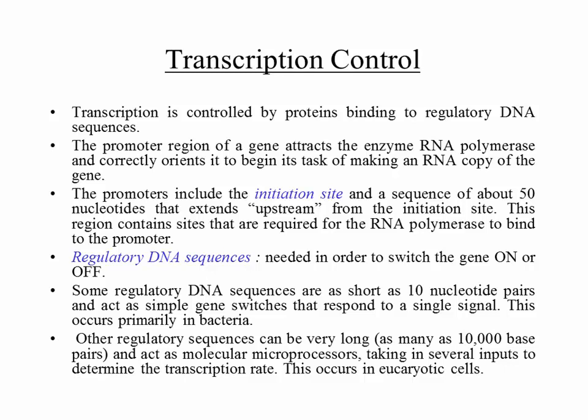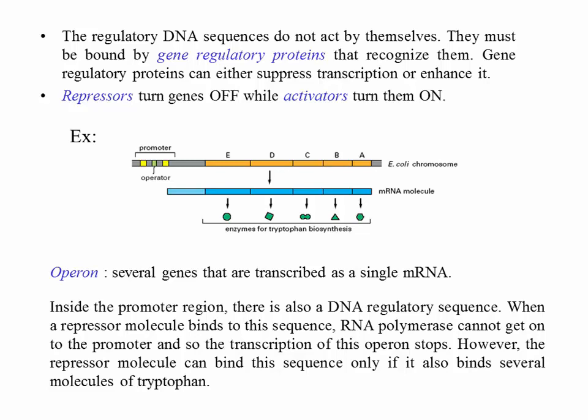In eukaryotic organisms, regulatory sequences can be very long — as many as 10,000 base pairs — and act as molecular microprocessors taking in several inputs to determine the transcription rate, like a committee voting on whether to start transcription or not. These regulatory sequences cannot act by themselves — they must be bound by gene regulatory proteins called activators or repressors. By binding specialized DNA sequences, gene regulatory proteins can either speed up or halt transcription.